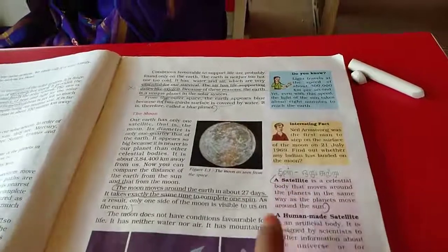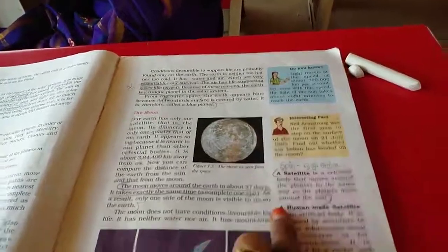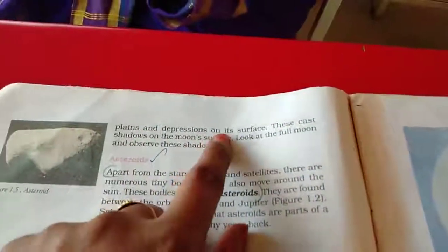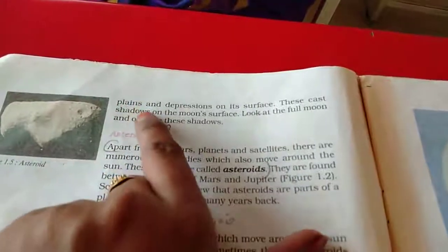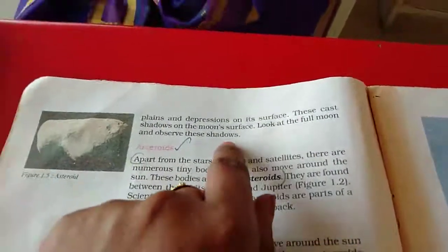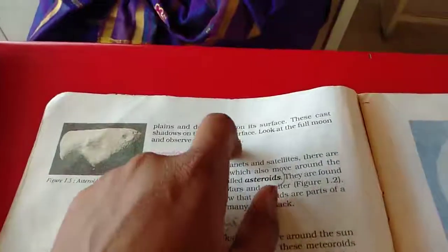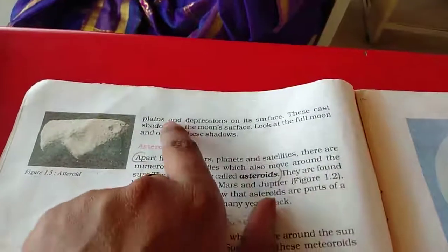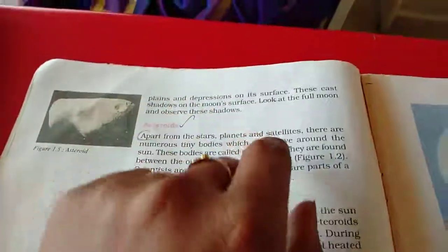Next about a satellite. We will read this later. We will complete this one. Plains and depression on its surface. These cast shadows on the moon's surface. Look at the full moon and observe these shadows. We can, when we get the full moon, we will see the moon, the shades of something in black, in whole moon.